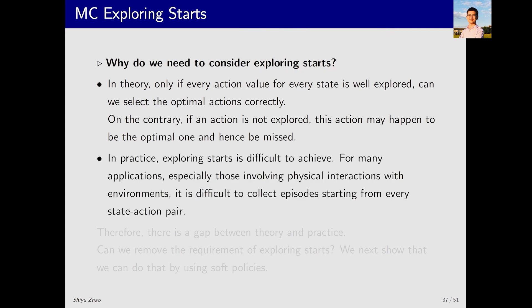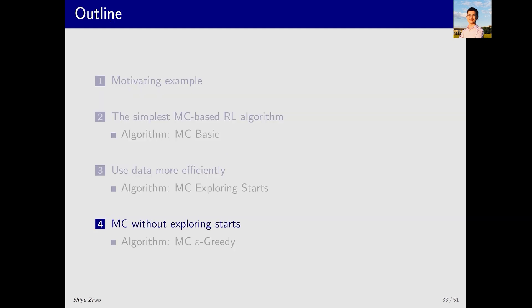Next, we introduce a new algorithm that can avoid the exploring starts condition, which may be difficult to achieve in practice. For instance, in a grid world example where we want a real robot to start from different state-action pairs, we would need to physically move the robot and set up the program, which may be unrealistic. So, there's a gap between theory and practice. Can we remove the requirement of exploring starts? The answer is yes. We can achieve this by using soft policies, which leads us to the fourth part: MC without exploring starts. Here, we'll introduce an algorithm called MC-ε-greedy.